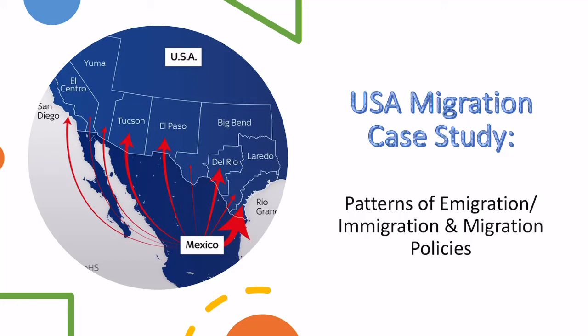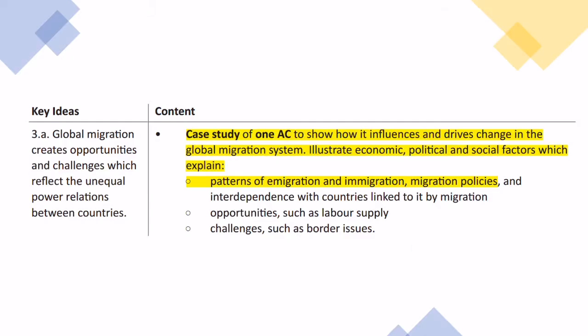Today I'm going to be looking at a USA migration case study. This first video is about the patterns of emigration and immigration and policies that have affected that. This is for the OCR geography spec and I've highlighted the section we're looking at here.